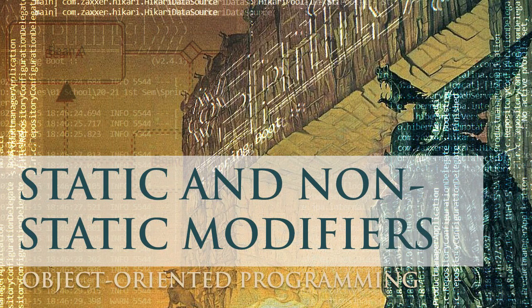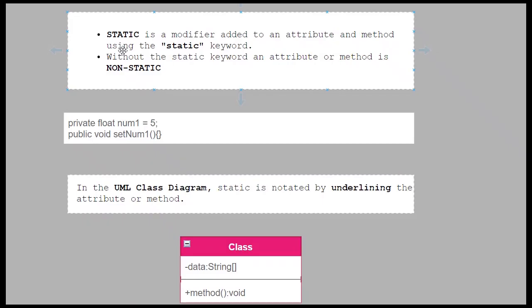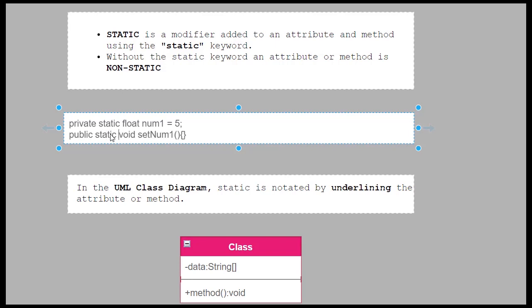Static and non-static modifiers: static is a modifier added to an attribute or method using the static keyword. To make an attribute static, after the access modifier we add the static keyword — same thing for the method. Without the static keyword, an attribute or method is non-static.